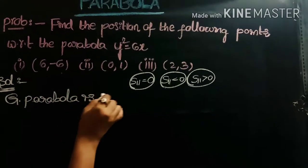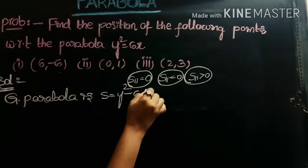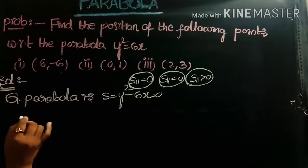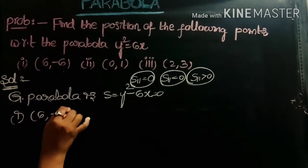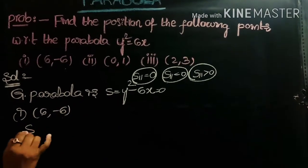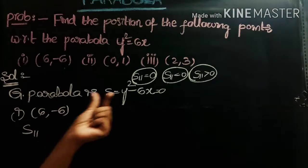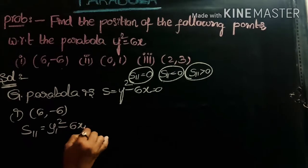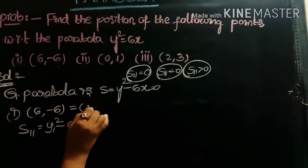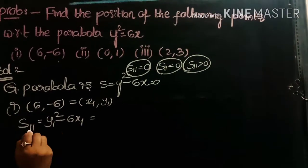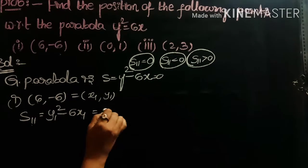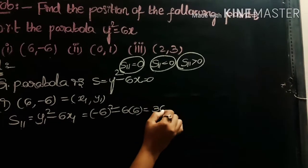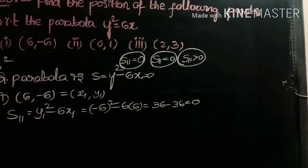We write the given parabola as S = y² − 6x = 0. For the first point (6, −6), we substitute into S₁₁ = y₁² − 6x₁. Here x₁ = 6 and y₁ = −6, so S₁₁ = (−6)² − 6(6) = 36 − 36 = 0. Therefore S₁₁ = 0.